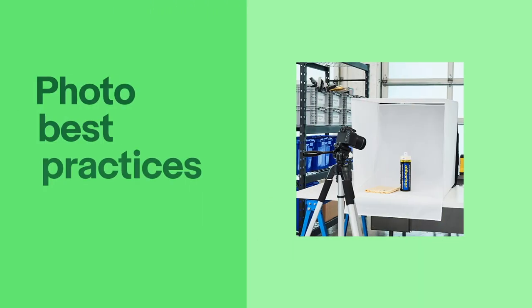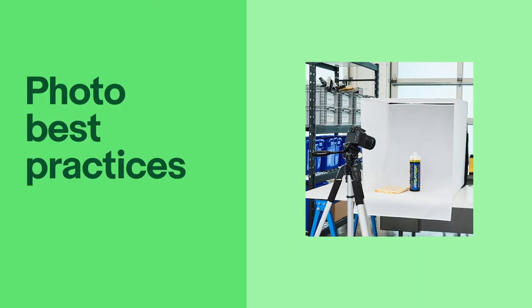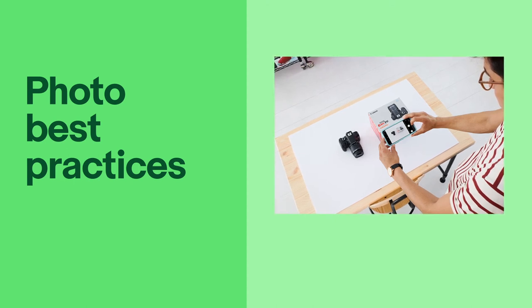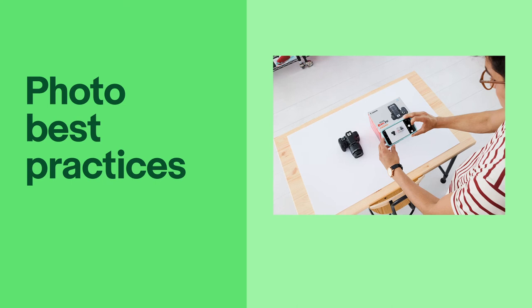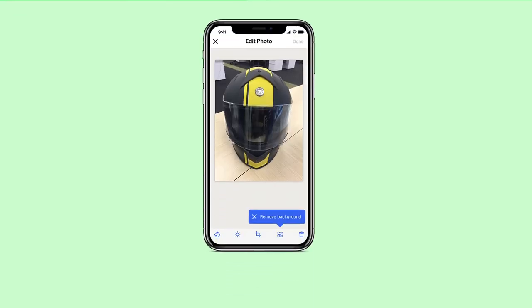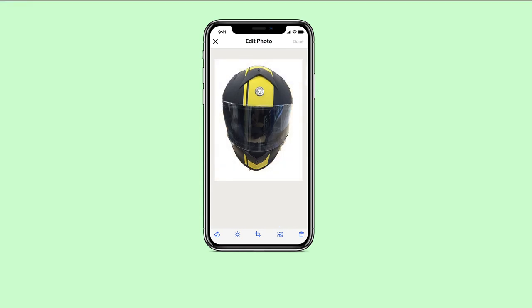Now that you know some photo do's and don'ts, here are some tips to make your photos look their best. Use a well-lit white background so your items stand out and look sharp. A white sheet, wall, or poster board can be used as the backdrop. It's especially important to use a white background in the title photo of your listing, which is the first photo — this will help your items show up in Google Shopping. The eBay app also has a background removal tool which easily adds a white background to your photos.